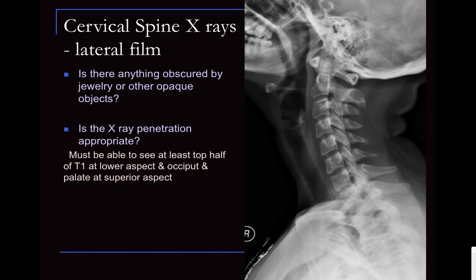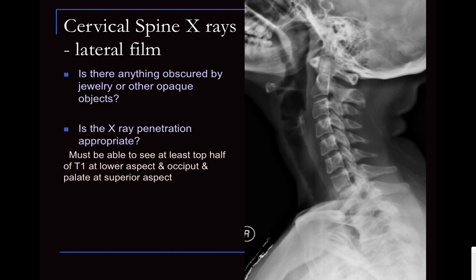Let us begin with the cervical spine lateral radiograph. The very first question we need to ask ourselves is: is the radiograph adequate? Is there any jewelry, earrings, hooks or something obscuring the spine? Is the penetration of the x-ray adequate? If we can see the upper half of T1, the first thoracic vertebra, and we can see the occiput as well as the palate, then the x-ray penetration is adequate. Sometimes only 5 or 6 cervical vertebrae are seen, and it is important to mention that in the report, as there may be pathology in the hidden vertebrae.